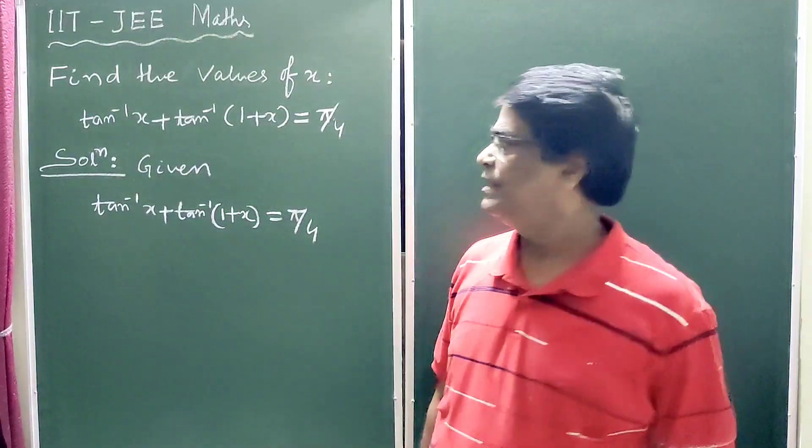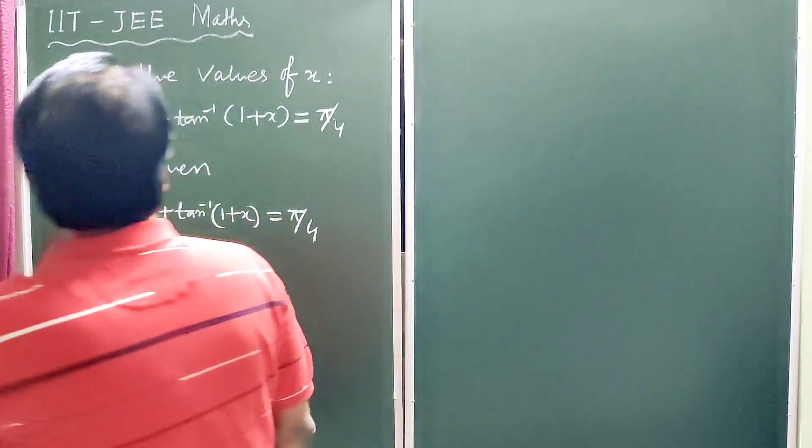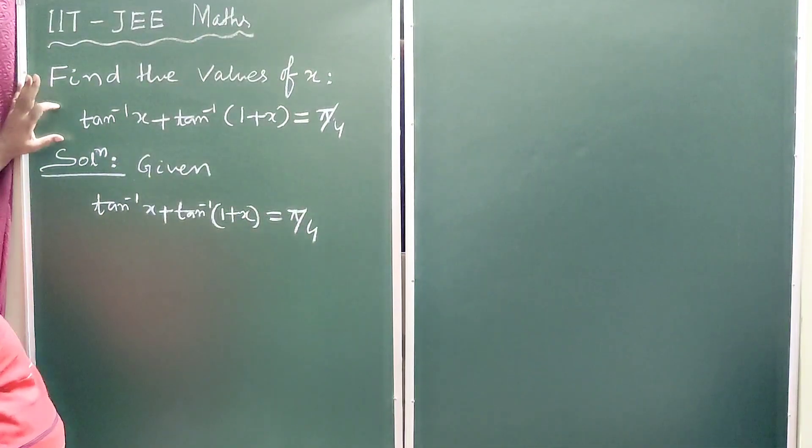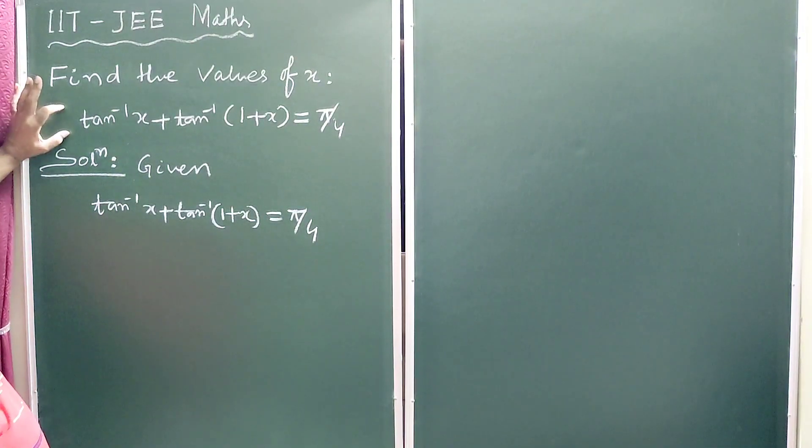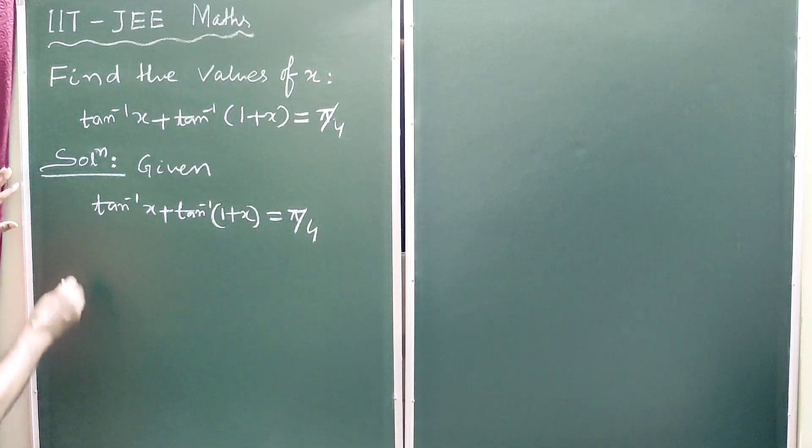Hello students, let us solve a trigonometric equation. The question is find the values of x where tan inverse x plus tan inverse 1 plus x is equal to pi by 4.